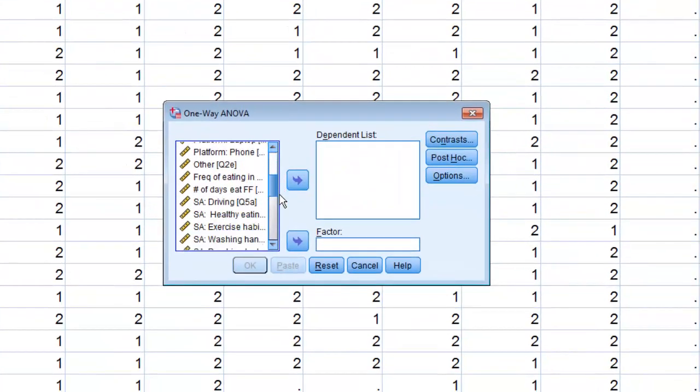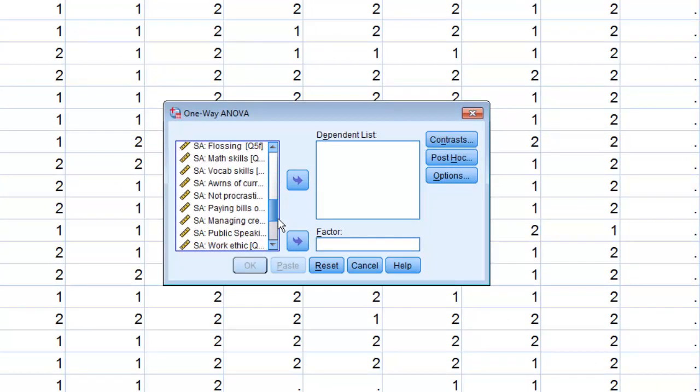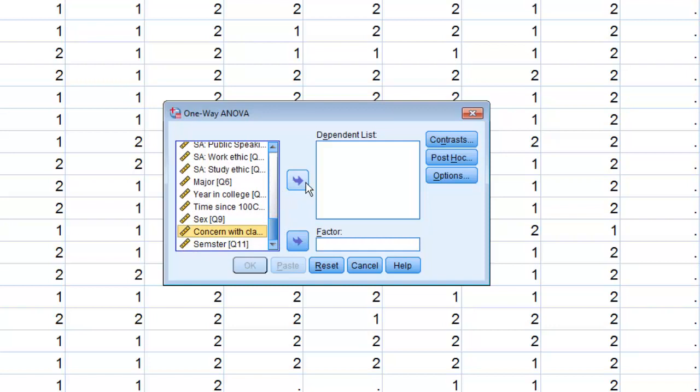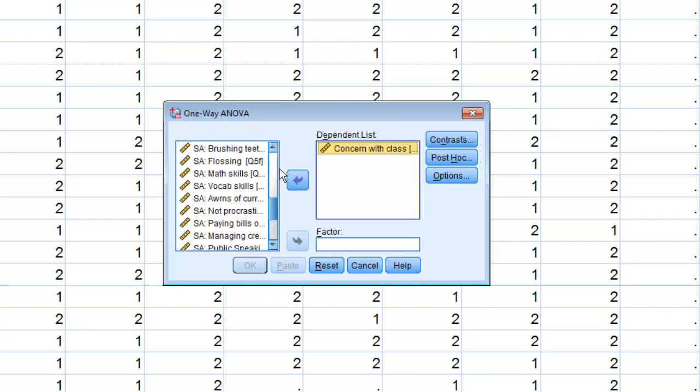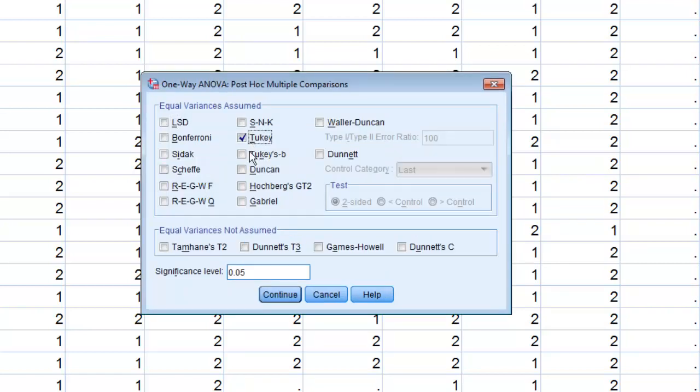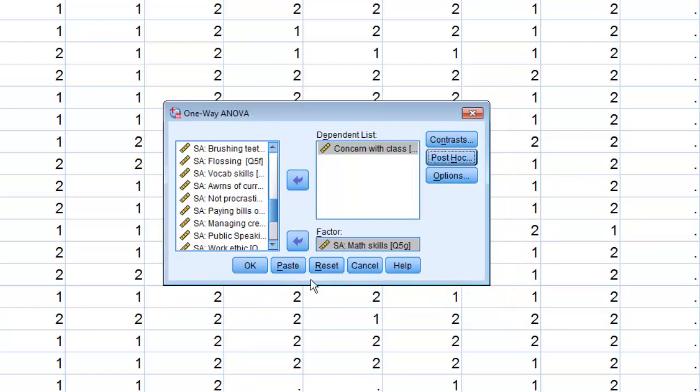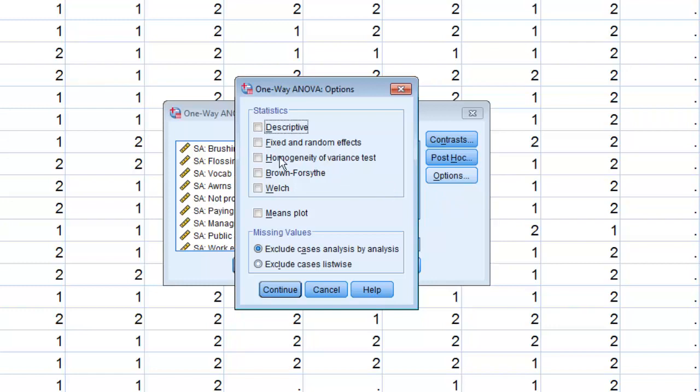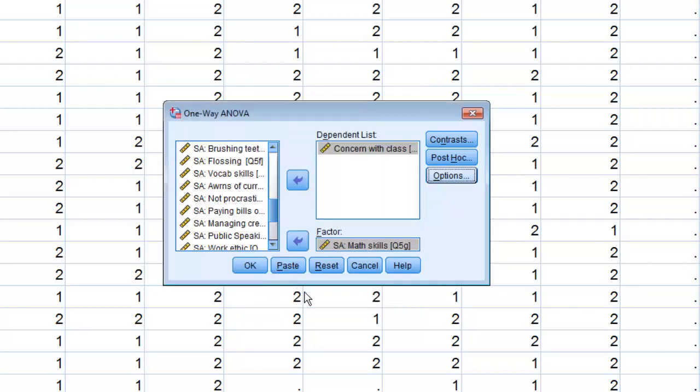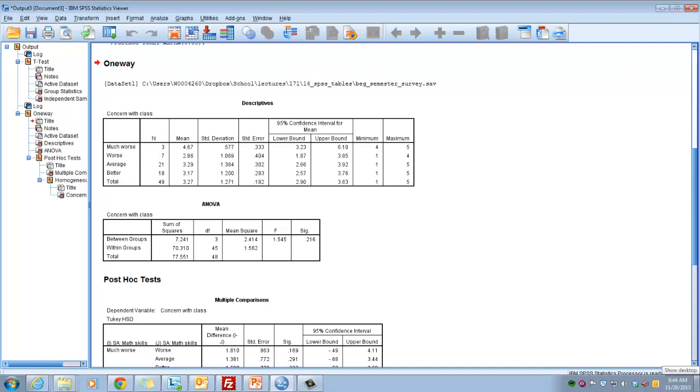Now, we said that our dependent variable was the concern in this class, the likelihood of succeeding in this class. And that might be affected by their perception of their math skills. So the dependent and the independent variables. Post hoc, choose Tukey, continue, and then under options, we want to choose descriptives. Continue, OK. And here it is.